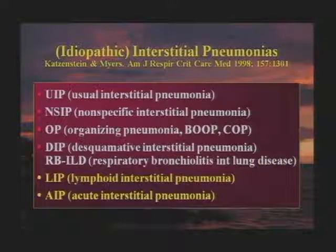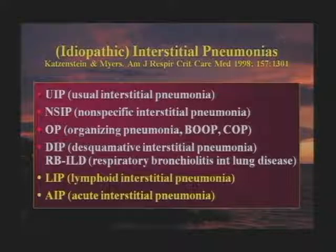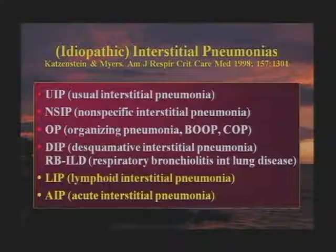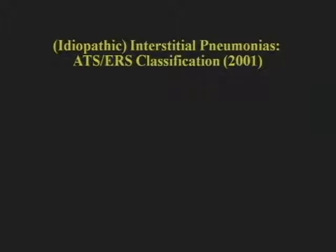The first four — UIP, NSIP, OP, and DIP — are common and seen regularly in clinical practice. LIP is often associated with collagen disease. AIP, acute interstitial pneumonia, is basically idiopathic ARDS. If someone is in the ICU with ARDS and no known cause, it may be AIP, and generally AIP is evaluated with plain films in the ICU on a daily basis rather than high-resolution CT.